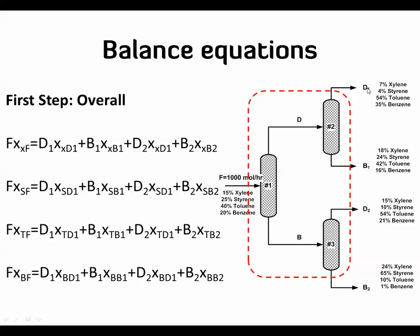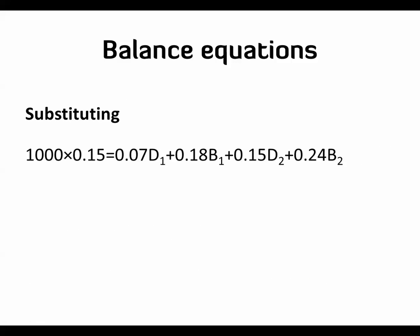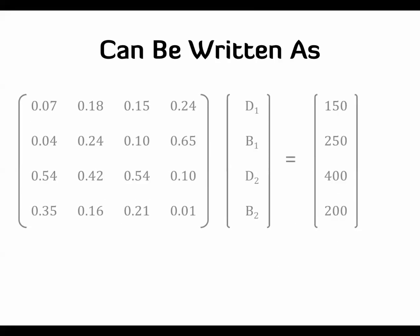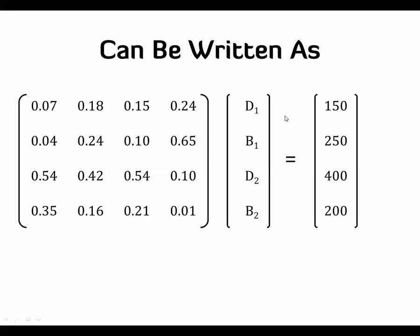By substituting, we get four equations and four unknowns: D1, B1, D2, and B2. These are four linear algebraic equations, which means we can solve them in many ways. What we're going to do today is solve them using matrices, applying what we talked about before — solving matrices using Excel — and see how this saves us time. We put the equations into matrix form: a coefficient matrix, a variable matrix, and a product.